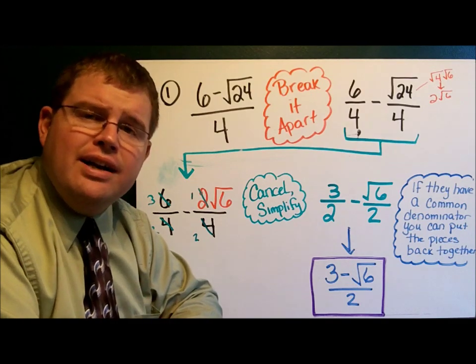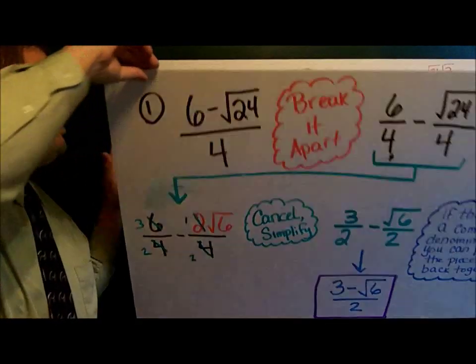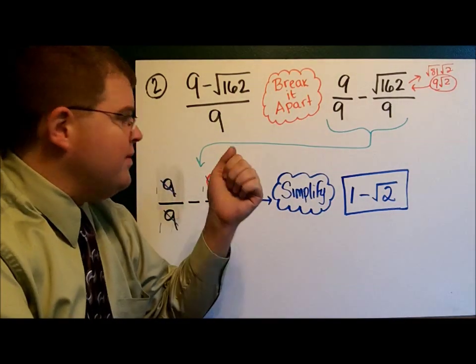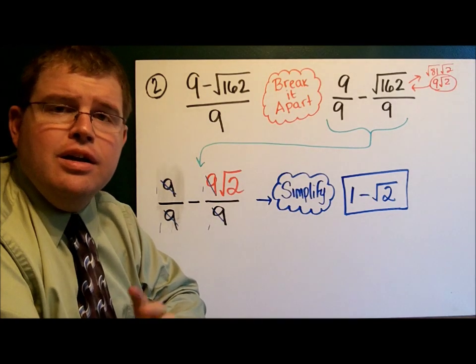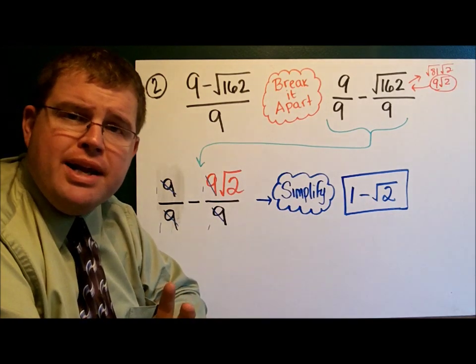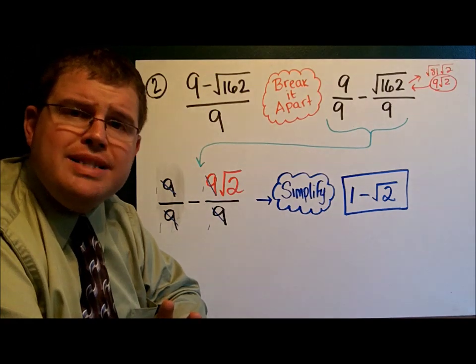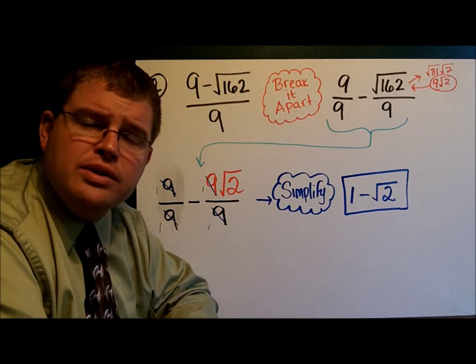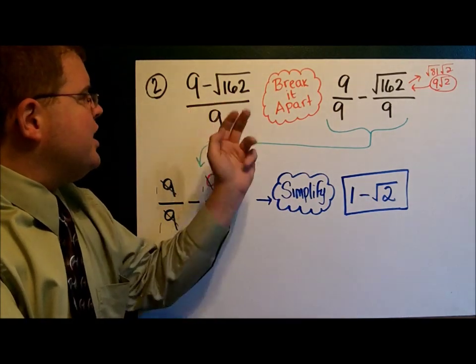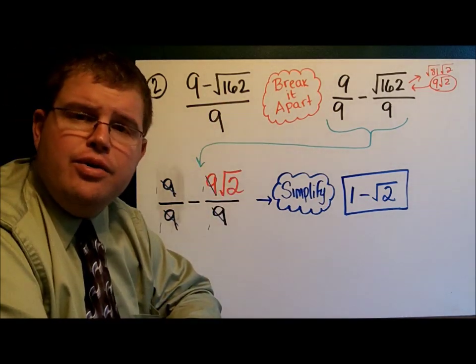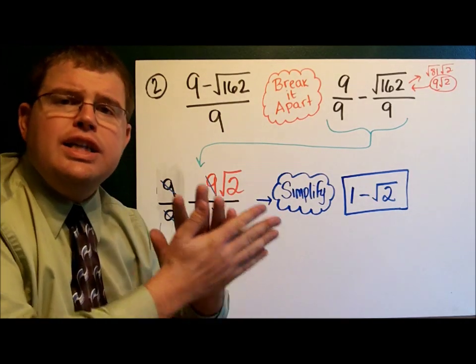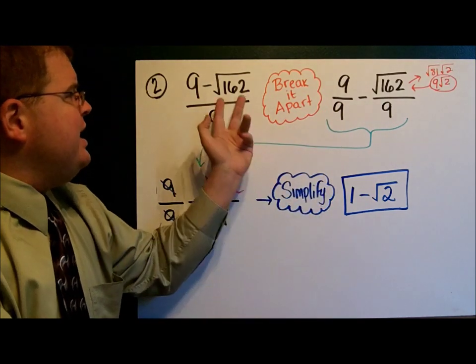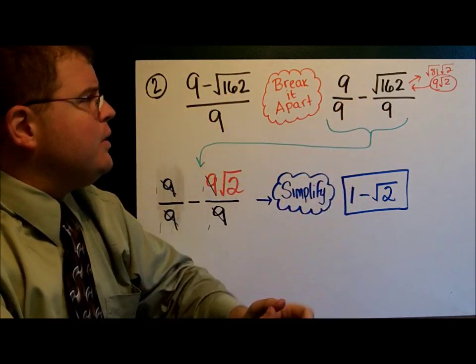Let's take a look at another example. On example 2, we have 9 minus the square root of 162 divided by 9. First thing I have to do is break it apart. Now be very careful. There's always a temptation to cancel these out. But you can't just cancel those because both pieces are divided by 9. You cannot do any reducing or any canceling until you've broken the fraction apart. 9 over 9 minus the square root of 162 over 9.